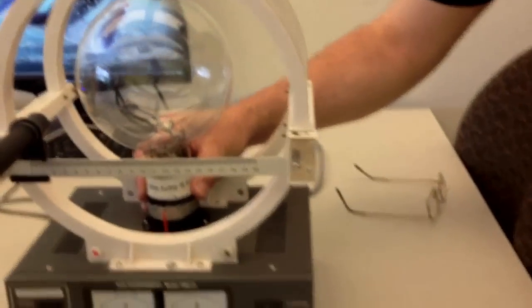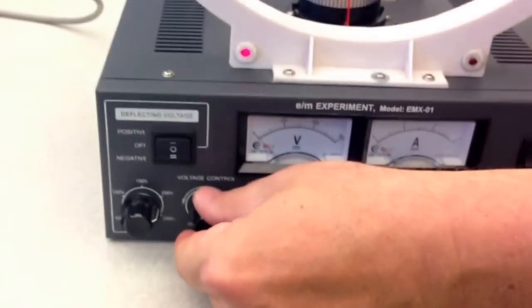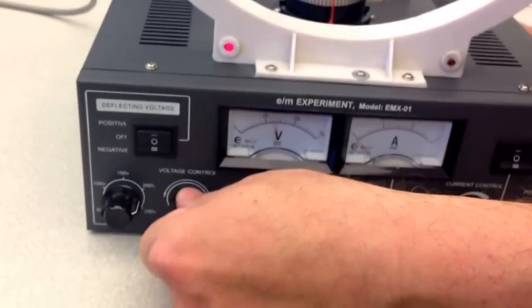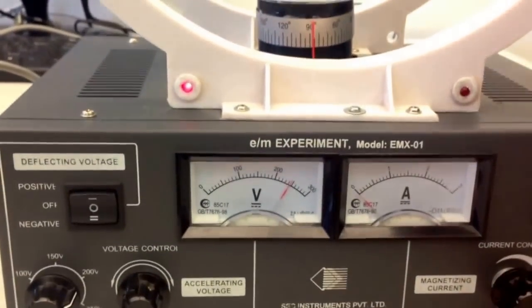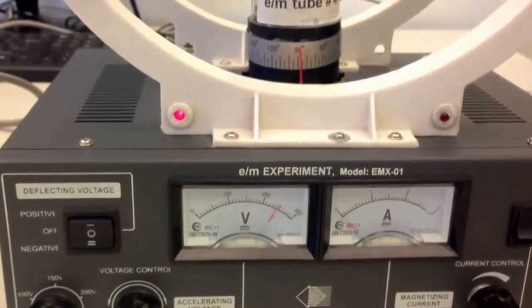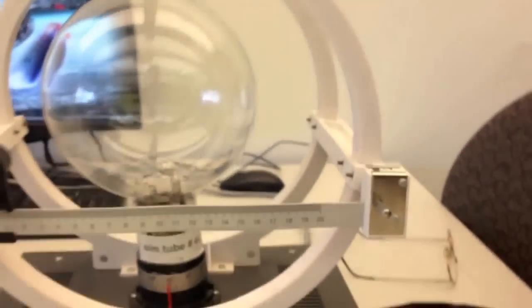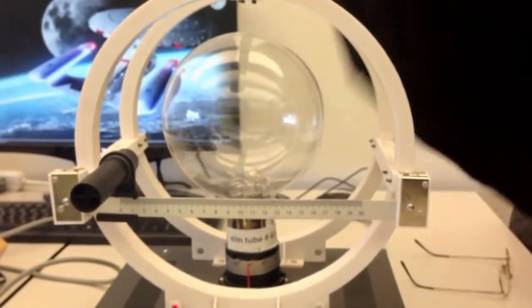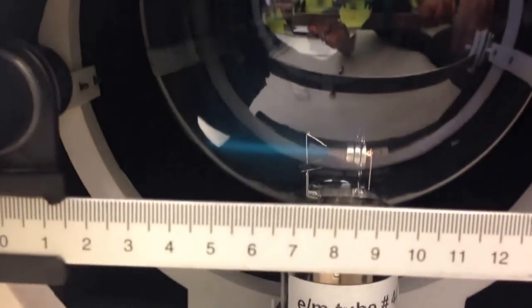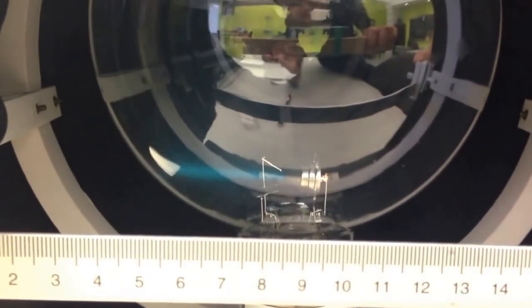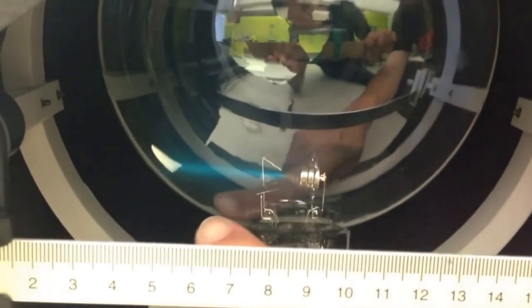Now that we've given it about a minute to warm up, we crank up the voltage to about 250 or 300 volts. Without turning off the lights, I'm going to drape this focusing cloth over the apparatus to increase the contrast. You should be able to see what looks like a greenish blue lightsaber pointing to the left. To make it a little bit easier to see, I'll remove this scale.